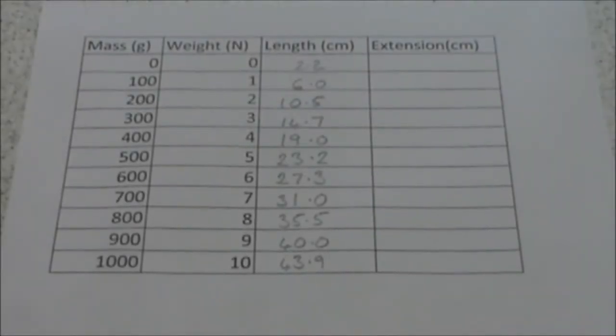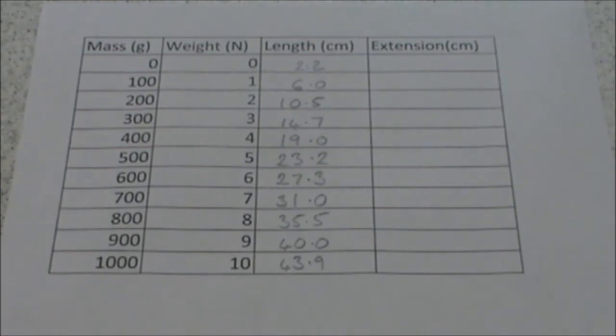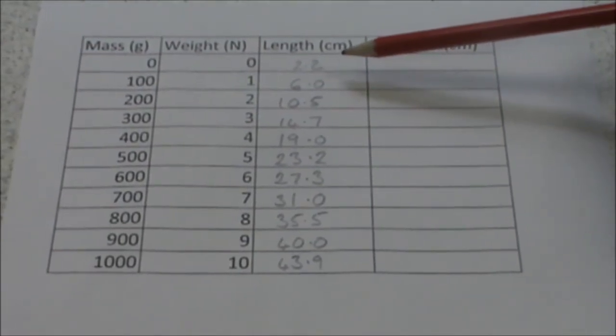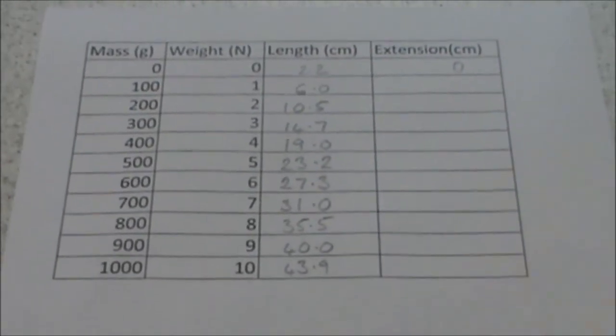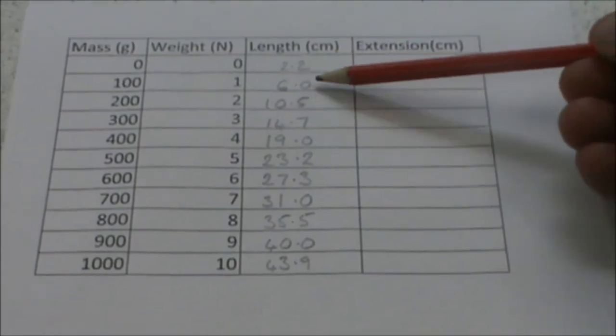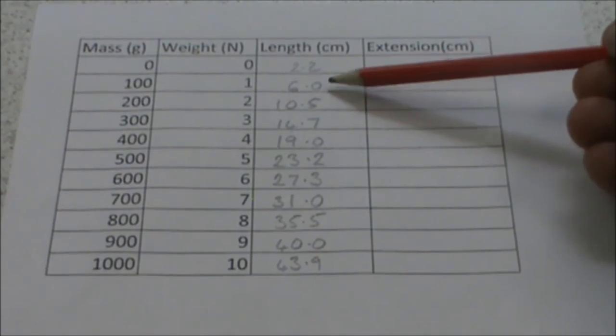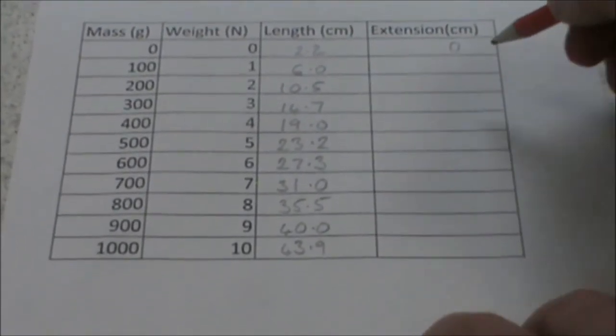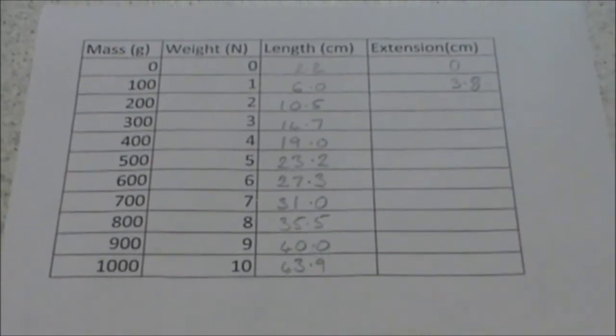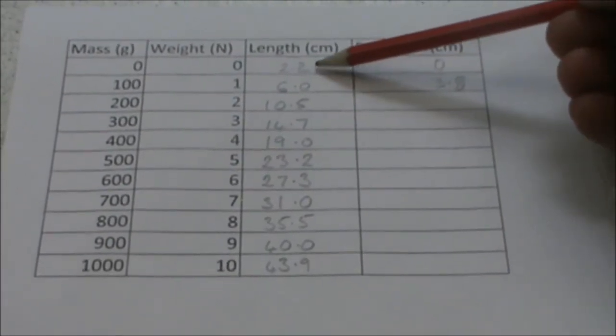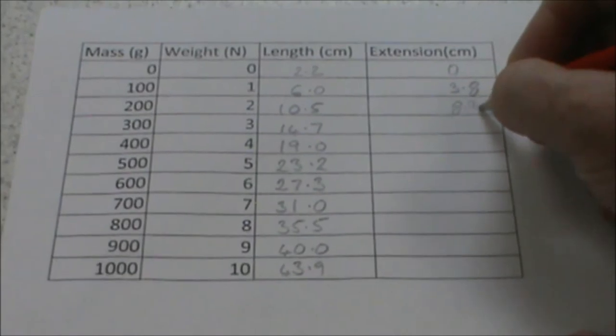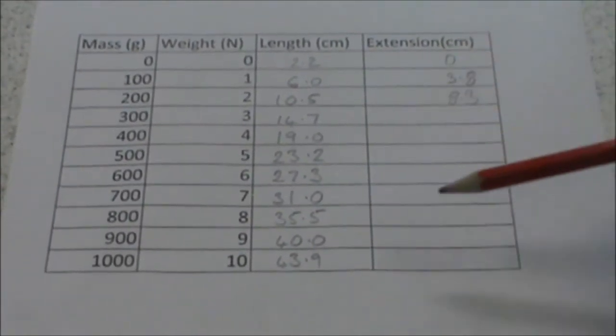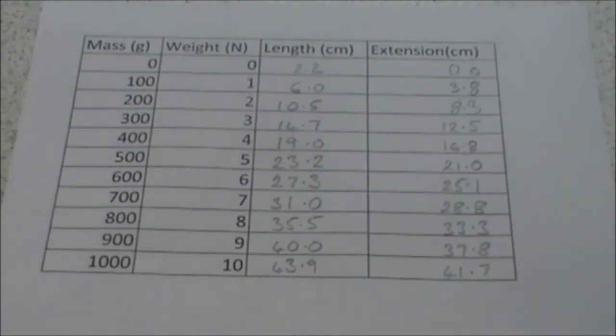So here we have our results from the experiment. The next thing that we need to do is calculate the extension. In order to calculate extension we need to subtract the original length from the length that we have measured. So with no mass added we are obviously going to have zero extension. Now we subtract our length from the measurement that we took. So 6 minus 2.2 is 3.8. We then subtract 2.2 from 10.5 to give us 8.3.